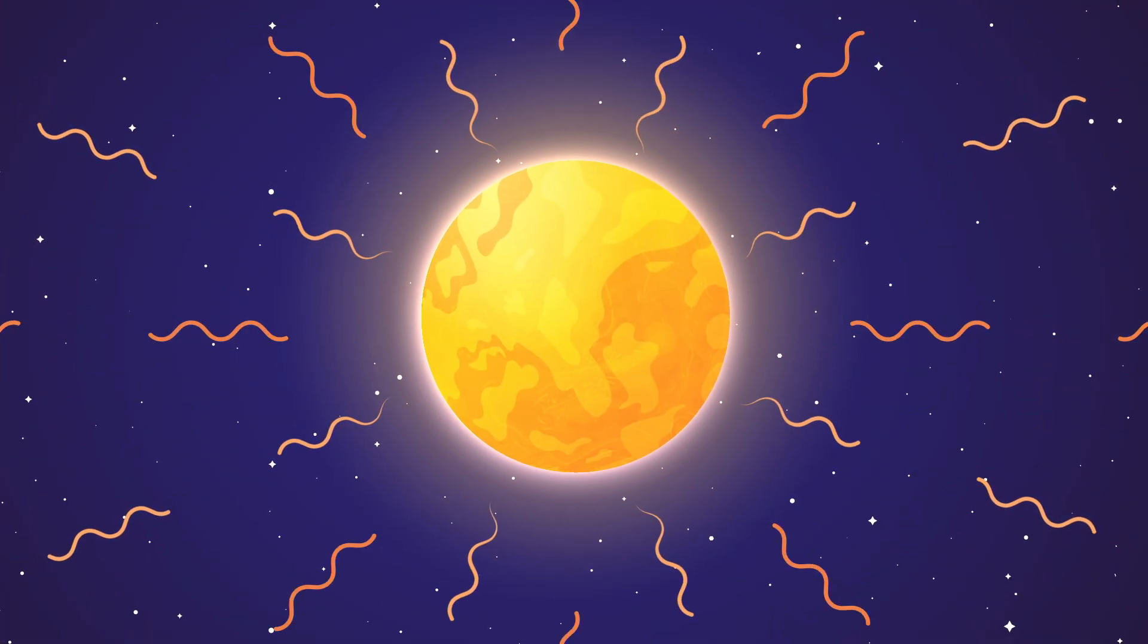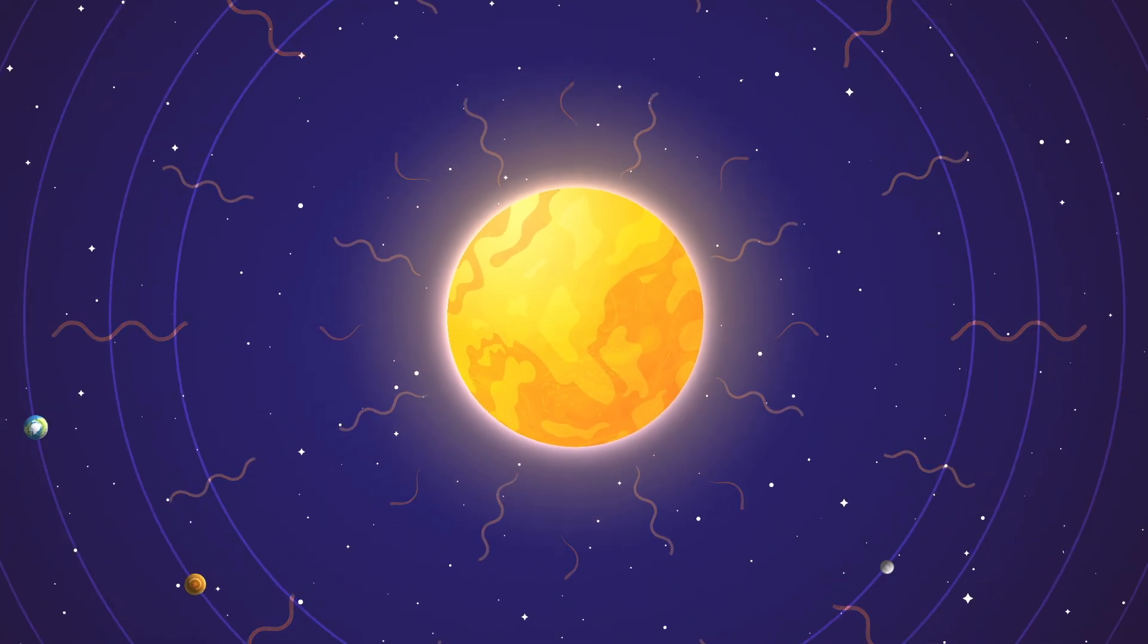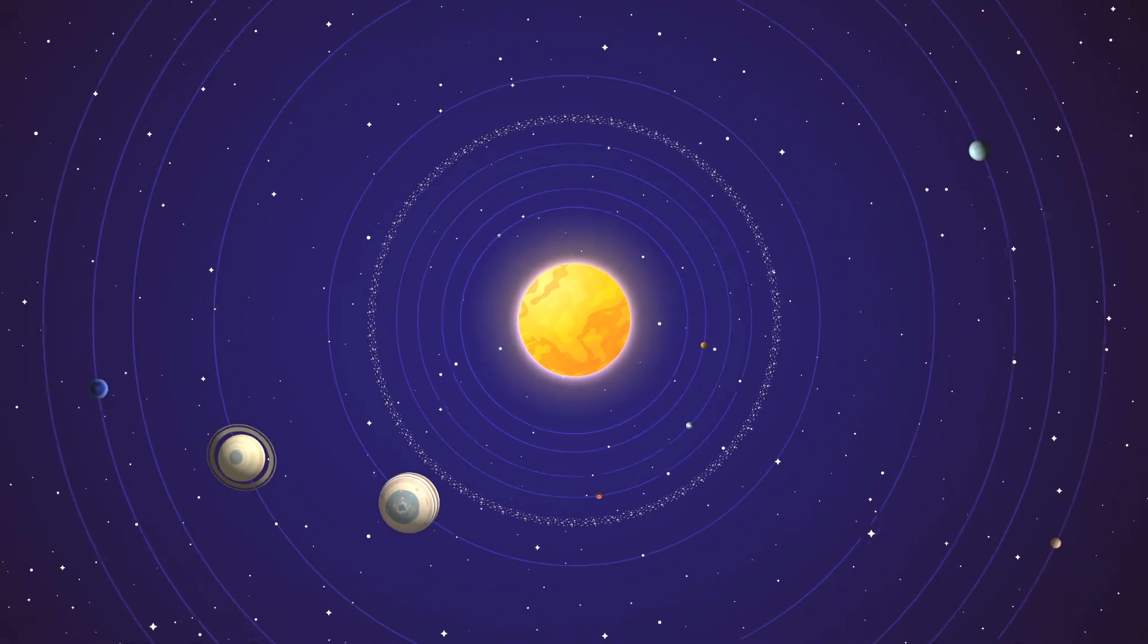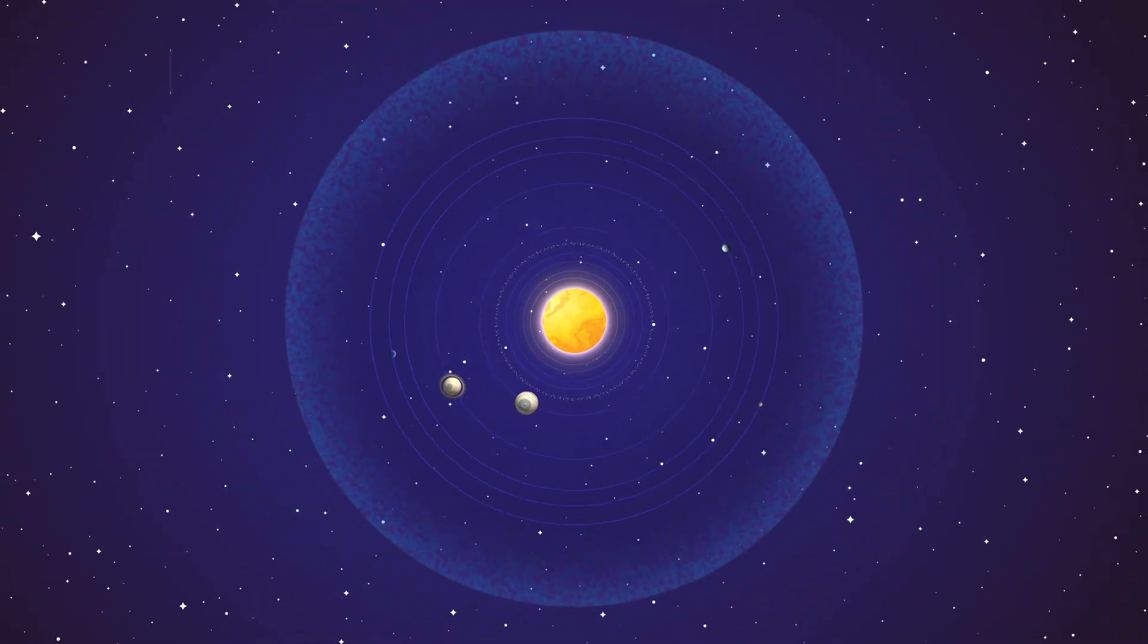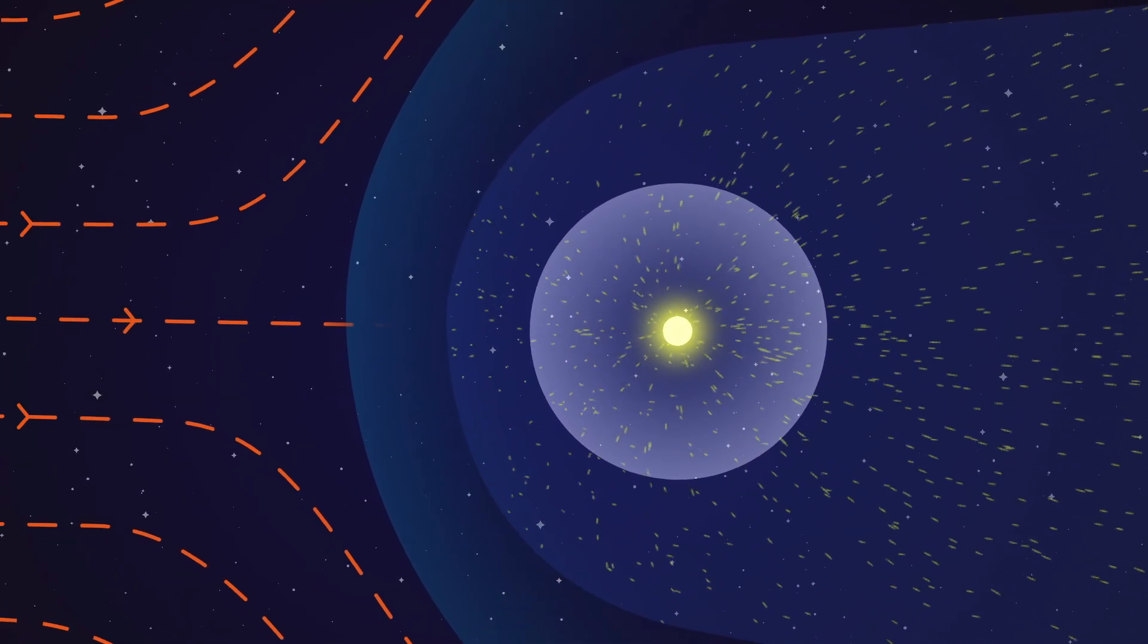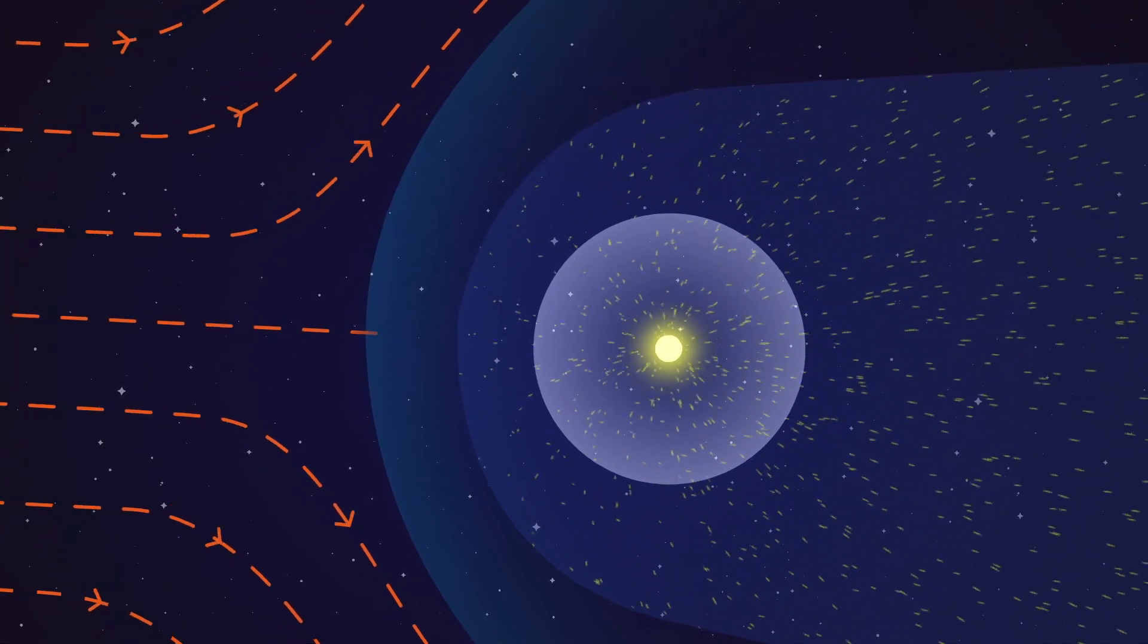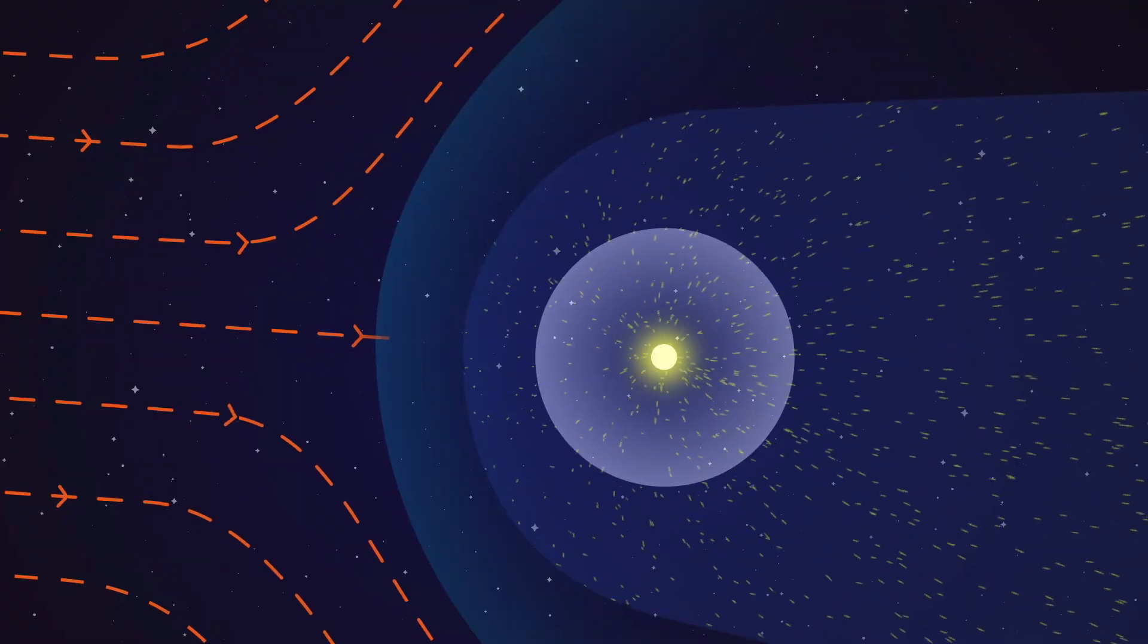At all times, the sun emits a flow of charged particles called solar wind. These particles extend beyond the boundary of Pluto, creating a protective bubble around our solar system known as the heliosphere. This vast region of space is dominated by the sun's magnetic field, which shields our solar system from interstellar radiation, like high-energy cosmic rays.